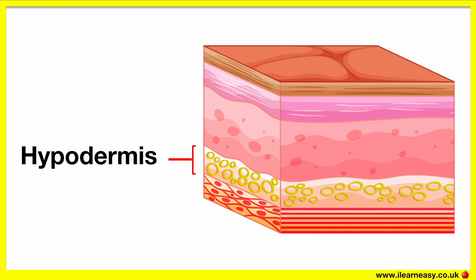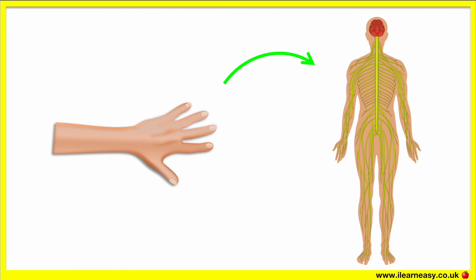The hypodermis is the third layer, also known as the subcutaneous tissue. This layer is mainly made up of fat and connective tissue. Fat is important for our body as it helps us to keep warm and provides protection for our bones and organs. Therefore, the hypodermis' main function is to store fat for these reasons. The skin contains sensory receptors which send signals to the central nervous system. This is how we feel things.